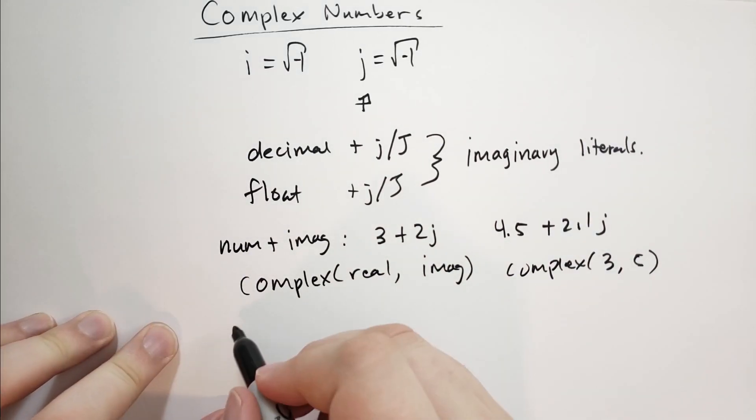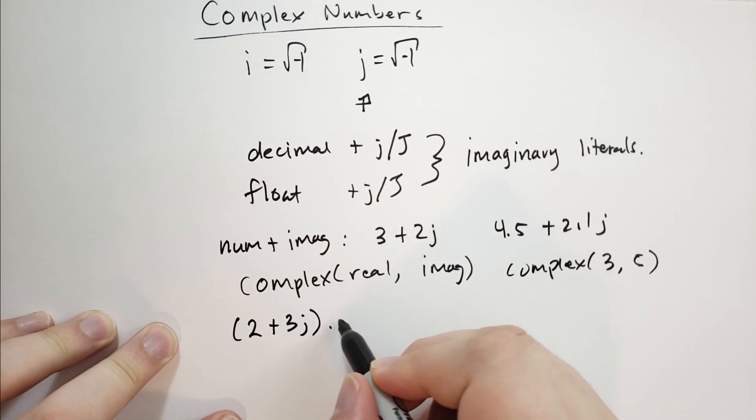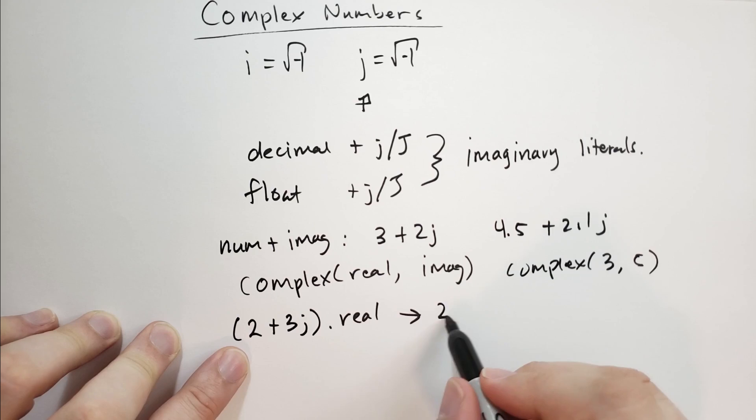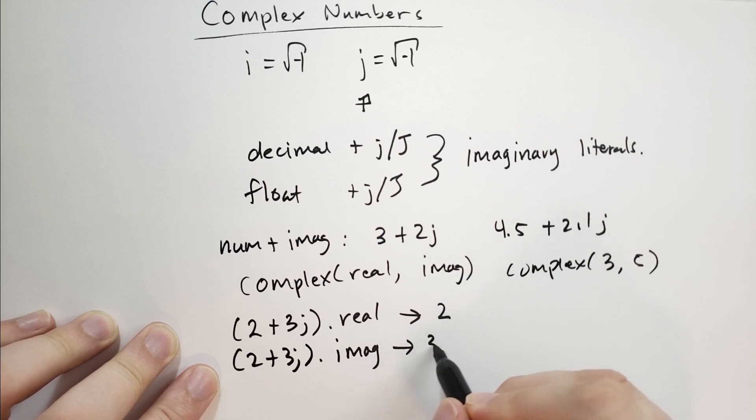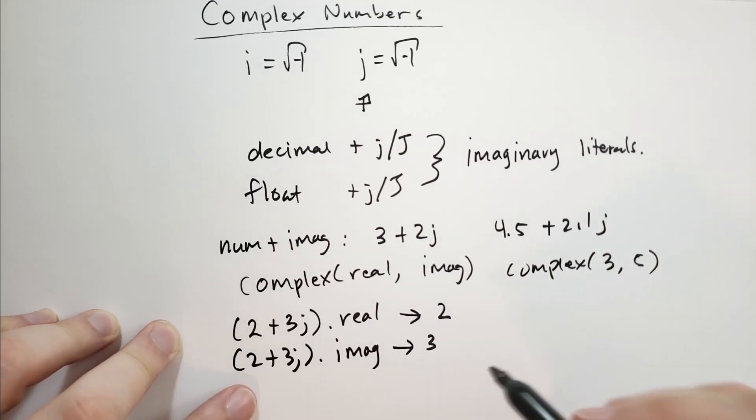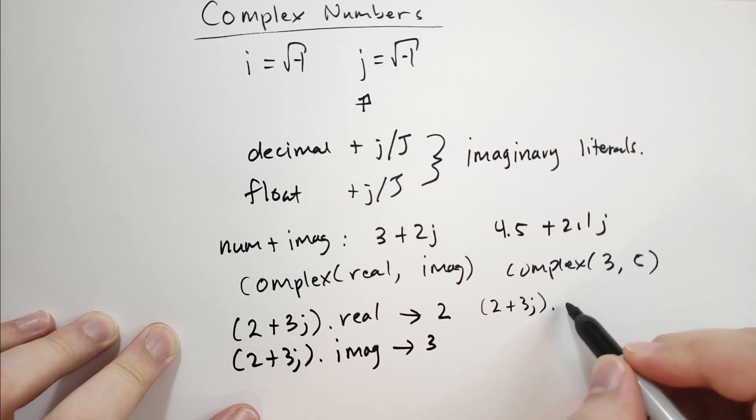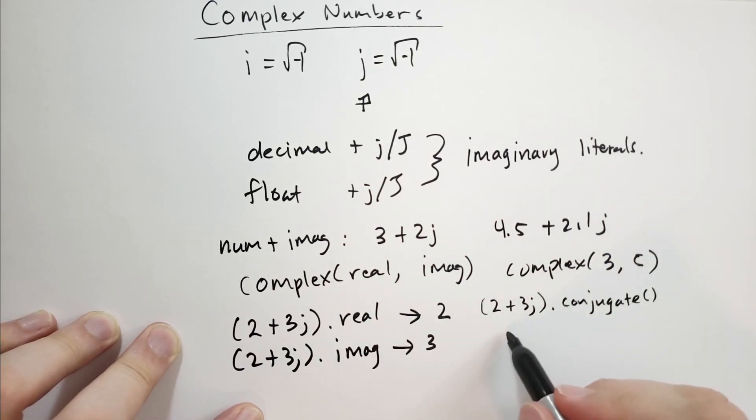And if you have a complex number, so let's say we have 2 plus 3j. And we do dot and we type r-e-a-l. That will give us the real component, which is 2. If we take the same number dot imag, that will give us 3, the imaginary component. And also we can do 2 plus 3j dot conjugate. And we do parentheses like that. And that should give you 2 minus 3j.